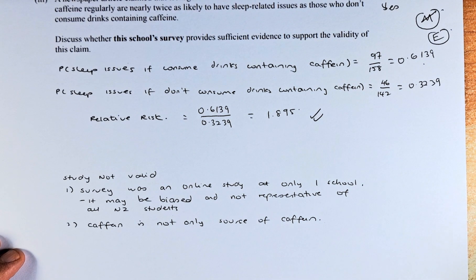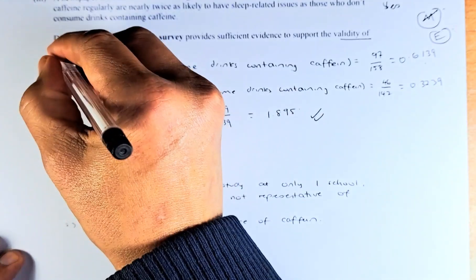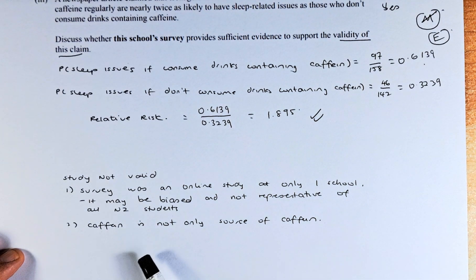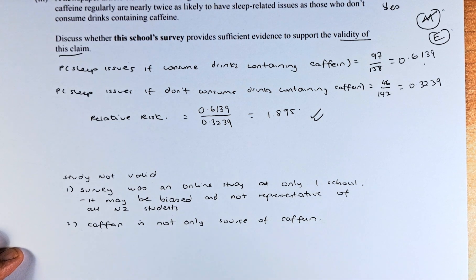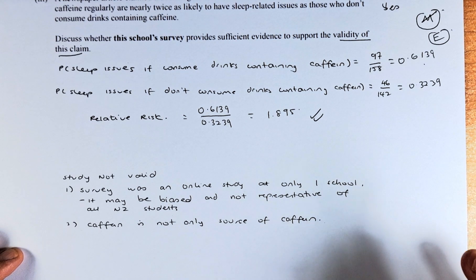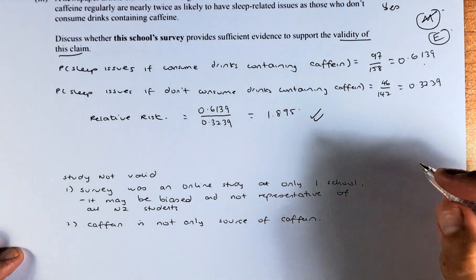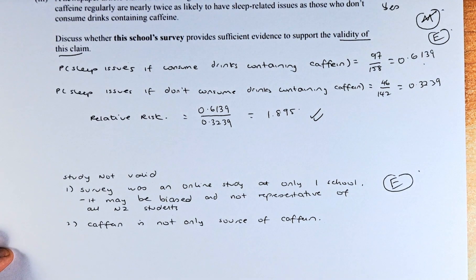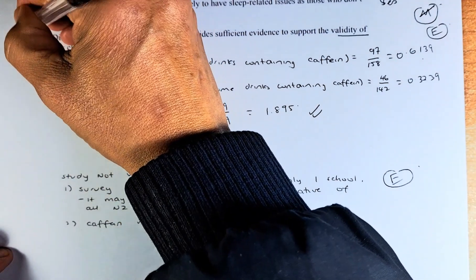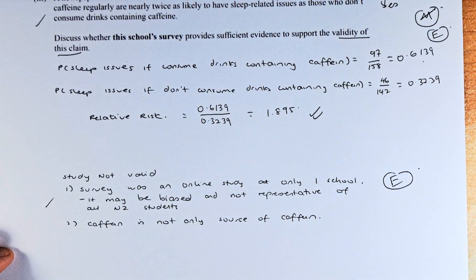To support the validity — or rather, to explain why this study may not be fully valid: first, coffee and energy drinks are not the only source of caffeine; students may have consumed other caffeinated drinks. Also, the survey was an online study of only one school in New Zealand, so it may be biased and is not representative of all New Zealand students. There are 2 excellence parts in this question — answer both and you are on your way to excellence in this paper.